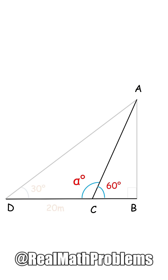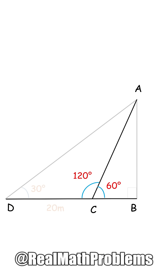At first, it's noticeable that the alpha angle shown on the display is a supplementary angle to the angle of 60 degrees, so alpha will be 180 minus 60, or 120 degrees.